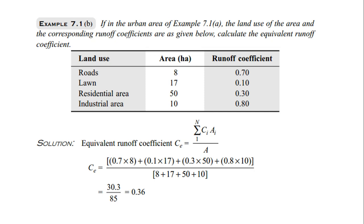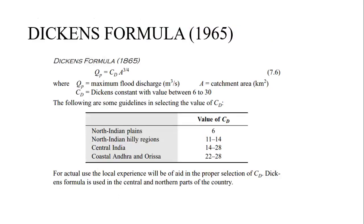In another example with different land use types — roads, lawn, residential area, industrial area — with different areas and runoff coefficients given, we find the equivalent runoff coefficient using C1A1 + C2A2 + C3A3 ... to get C = 0.36.